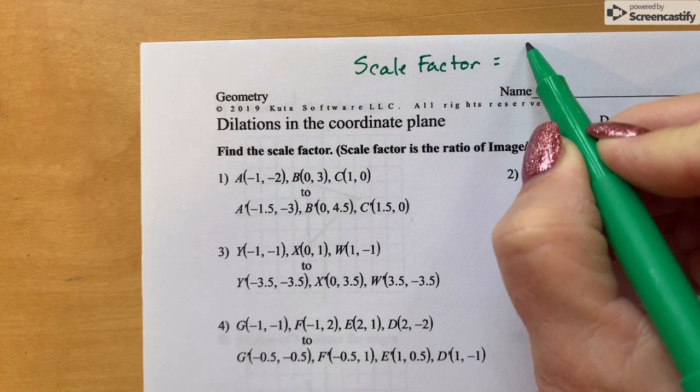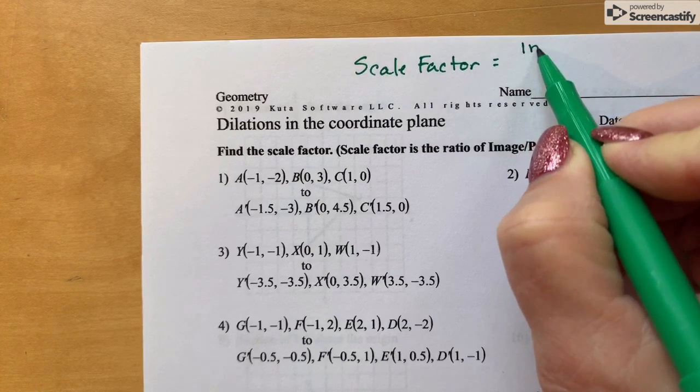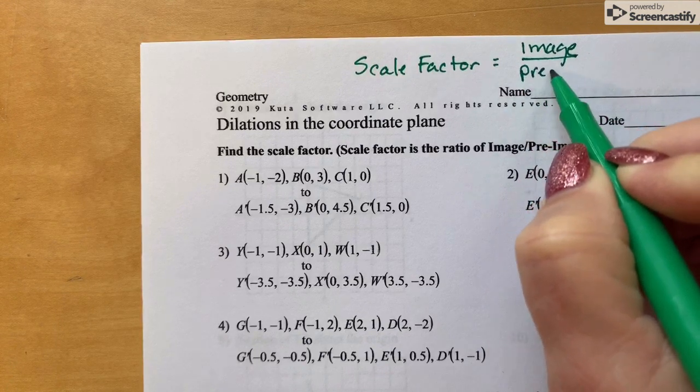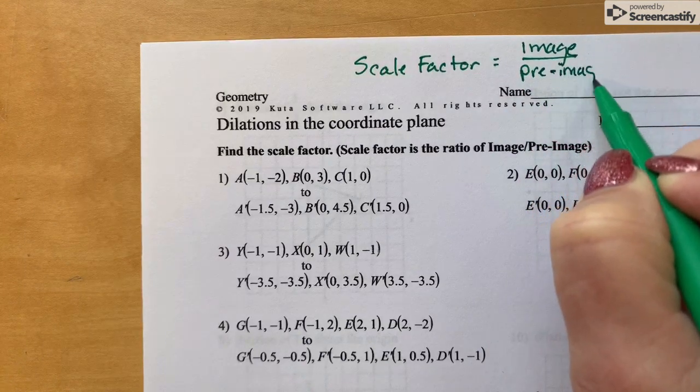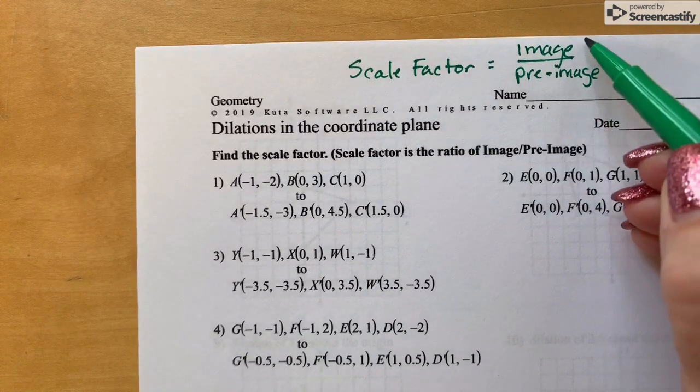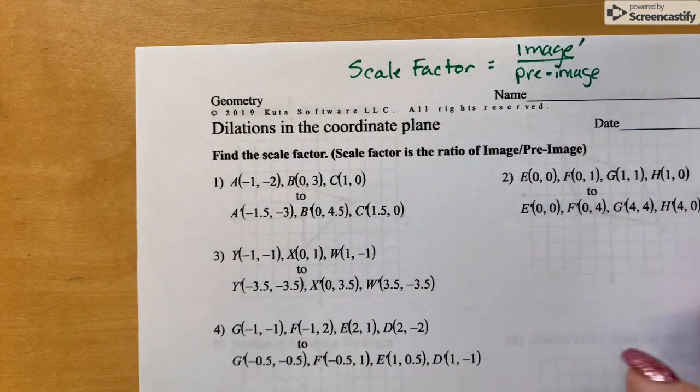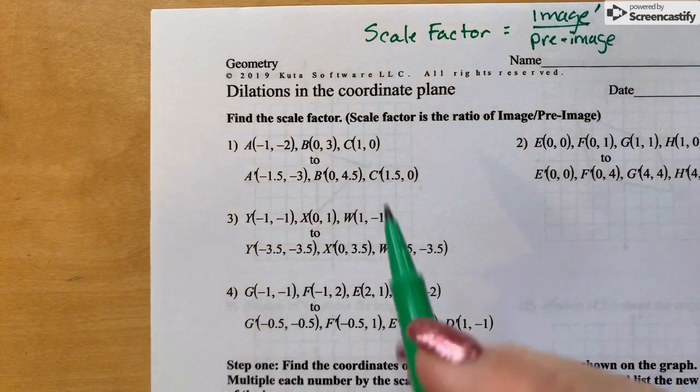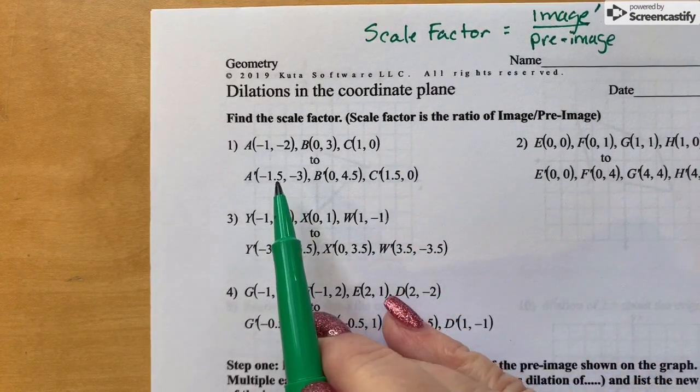In today's exercise, as always, the image will always be represented by the prime marks. So you are asked to find the scale factor or the dilation ratio, and the image will be the numbers with the prime and the pre-image without the prime.